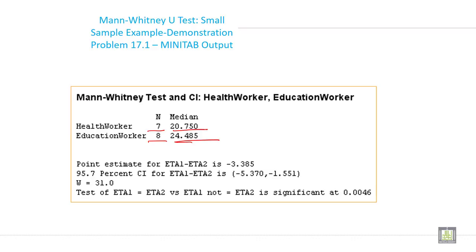Point estimate for ETA1 minus ETA2 is minus 3.385. 95.7% confidence interval for ETA1 minus ETA2 versus ETA1 not equal to ETA2 is significant at 0.0046.